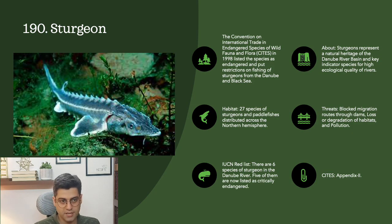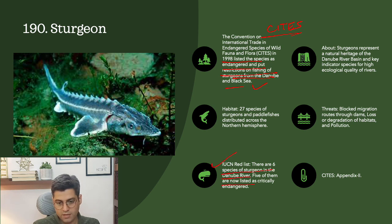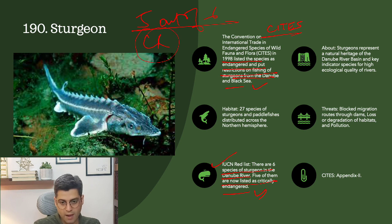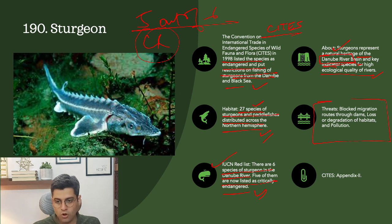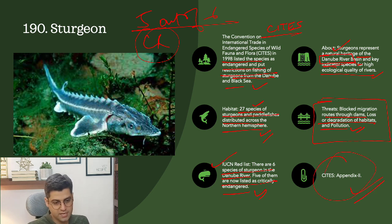The last species covered today is Sturgeon. CITES in 1998 listed the species as endangered and put restrictions on sturgeons from the Danube and Black Sea. There are six species of sturgeon in the Danube River; five of them are now critically endangered. Their habitat spans 27 species of sturgeons and paddlefishes distributed across the Northern Hemisphere, particularly in the Danube River in Western Europe. Sturgeons are a key indicator species for ecological quality of rivers. Threats include blocked migration routes through dams, habitat loss or degradation, and pollution. CITES Appendix 2.